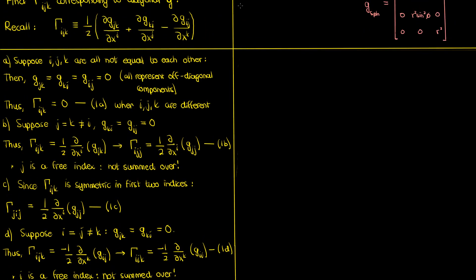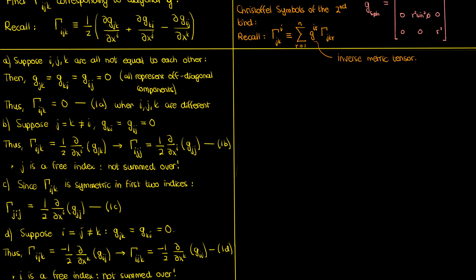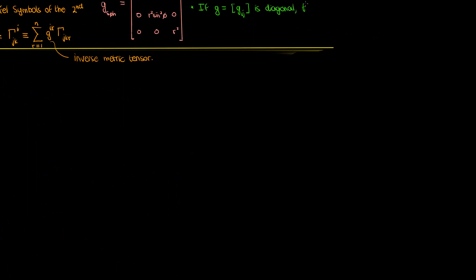So now we've found the formulas for the first kind Christoffel symbols for a diagonal metric tensor corresponding to an orthogonal curvilinear coordinate system. Let's work on the second kind Christoffel symbols. Recall that in terms of the first kind, the second kind Christoffel symbols are defined with the index r summed over, and g super ir representing the components of the inverse metric tensor. I'm explicitly writing the summation symbol rather than using Einstein notation to avoid confusion with repeated free indices. If the regular metric tensor is diagonal, the inverse metric tensor must also be diagonal — its only nonzero components are the diagonal ones, equal to the reciprocal of the corresponding diagonal components: g super ii equals 1 over g sub ii. The off-diagonal components of the inverse metric tensor are all zero.